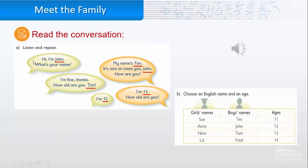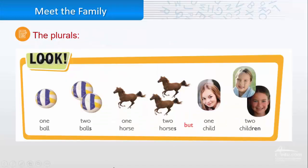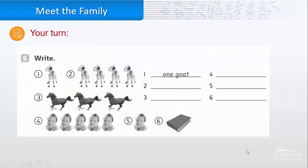The plurals. Look at the words: one ball, two balls — we add the letter S. One horse, two horses — we also add the letter S. But one child, two children — sometimes the plural does not end with an S. Look and write. Here we have one, so we write one goat.